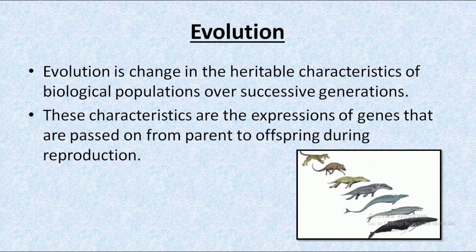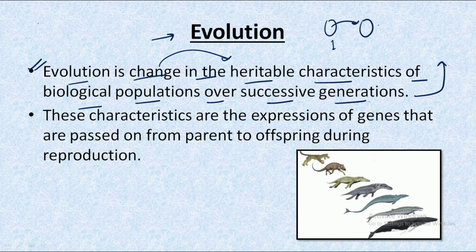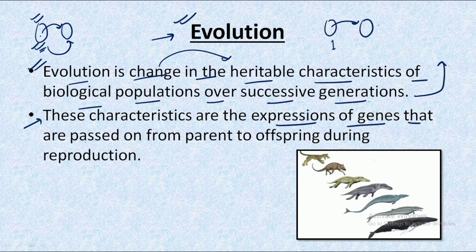Talking about the unit, the first most important thing we need to understand is what is evolution. Evolution in simple terms can be called as a change — specifically, it is a heritable change that passes on from one generation to the next. So we can say that evolution is the change in the heritable characteristics of a biological population over successive generations.